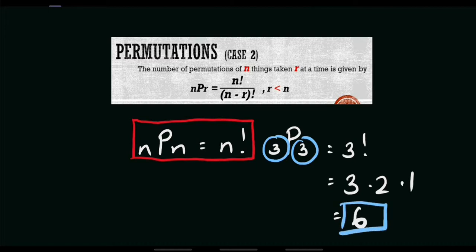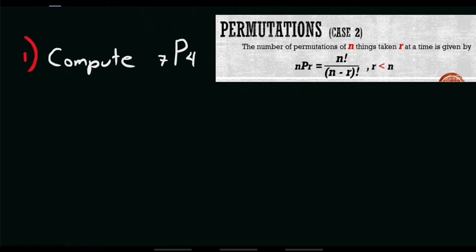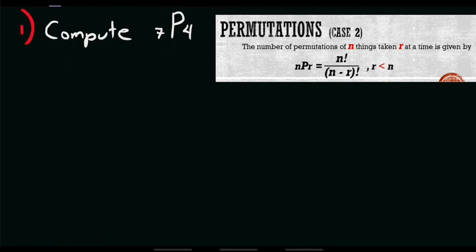This time, let's try to solve some problems using permutation wherein the values of n and r are not equal. For problem number 1, we are asked to compute the permutation of 7 taken 4 at a time. First, let's list down the values: the value of n is 7 and the value of r is 4.